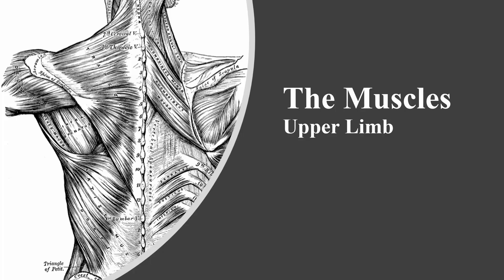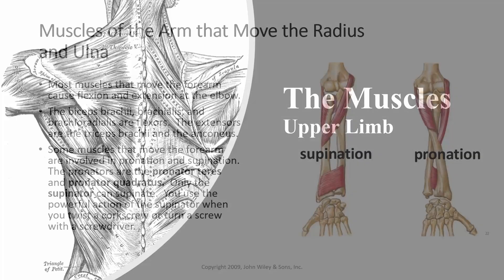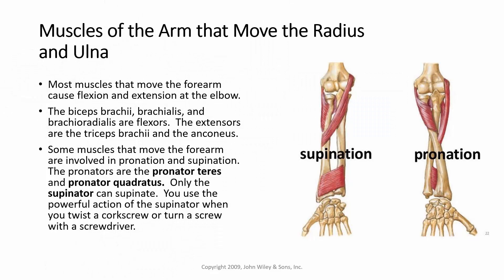In this lecture, we're going to look at the muscles of the upper limb — specifically muscles of the arm that move the radius and ulna. Most muscles that move the forearm cause flexion and extension at the elbow. The biceps brachii, brachialis, and brachioradialis are flexors, found on the anterior part of the arm. The extensors are the triceps brachii and the anconeus, which is found around the elbow.